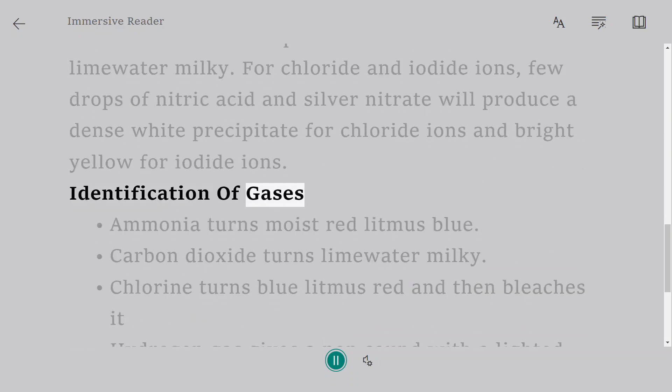Identification of gases. Ammonia turns moist red litmus blue. Carbon dioxide turns lime water milky. Chlorine turns blue litmus red and then bleaches it.